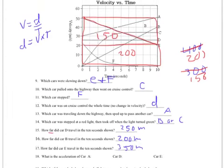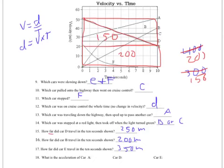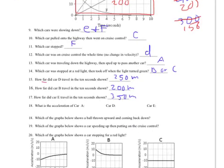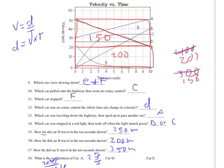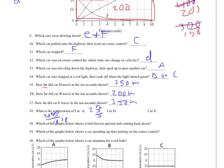What is the acceleration of car A? I have to take A and see how much it changed its velocity. It started off at 30 and ended up at 50, so it changed its velocity by 20 meters per second. 20 meters per second divided by 10 seconds — that's a positive acceleration of 2 meters per second per second. Car D, on the other hand, has a slope of zero — it starts off at 25 and ends up at 25. Therefore its acceleration is zero: 0 meters per second per second.